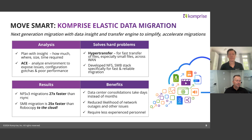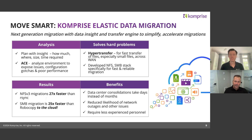Nine times out of ten, when there's a problem with a data migration — and they're hard, data migrations are hard and clumsy — the ask is: can you make it simpler, can you find the problems in advance, can you make it faster? That's what we've done. The ACE toolkit finds problems in the network before you start. Hyper transfer speeds it up. If you're doing a migration of small files over a WAN, our hyper transfer application takes away the inefficiencies of the network and latency across the network.